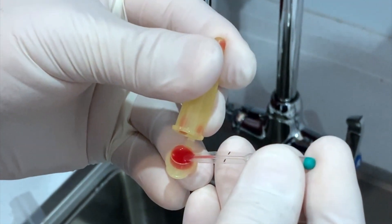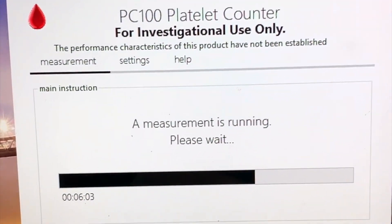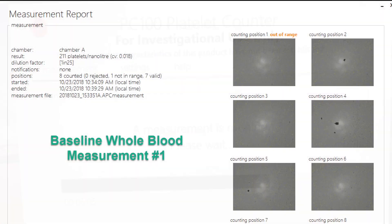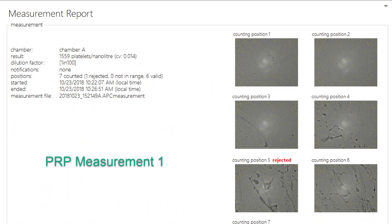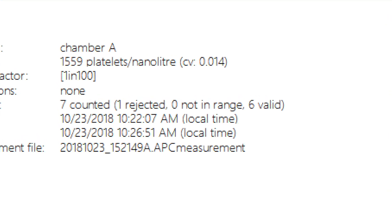What we will find is that the concentration of the Genius system was dramatic. It went from 211 platelets per nanoliter up to 1,559 platelets per nanoliter, which is exactly what you want.